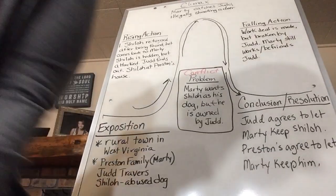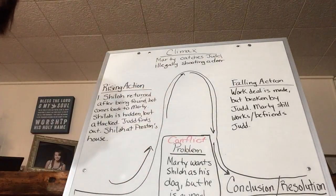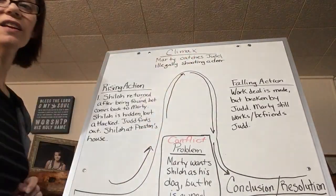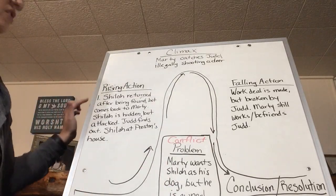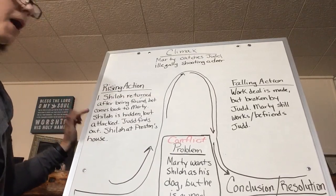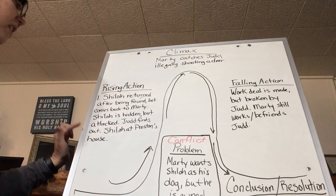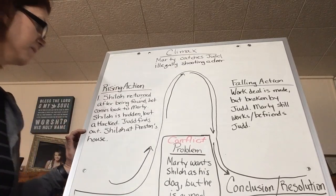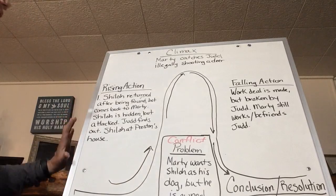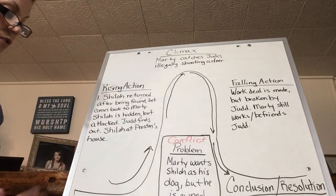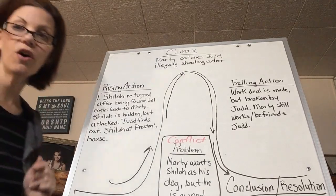Now we're going to go through the rising action. Rising action is all the different things that happen in a book that build up to the climax, and the whole time we're working toward solving the problem. In the rising action: Shiloh is returned after being found by Marty, but comes back to Marty; then Shiloh is hidden in the woods but is attacked; Judd finds out because Doc Murphy has to tell him, but Doc Murphy lets Shiloh stay at the Preston's house for healing. That is the rising action — how an author builds a story.